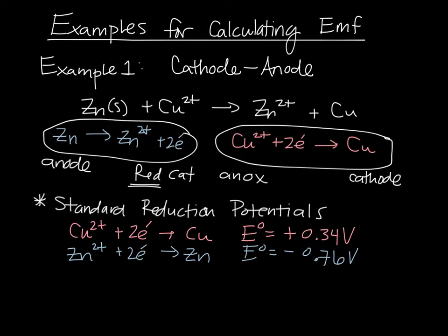To figure out the cell potential, just subtract the two. Do the cathode minus the anode. Notice that the sign ends up switching on the anode. That's good, because that means that the reaction was flipped. If we do the math for the subtraction problem, we'll end up with a cell of positive 1.1 volts. And that's how you find the EMF for a standard cell.